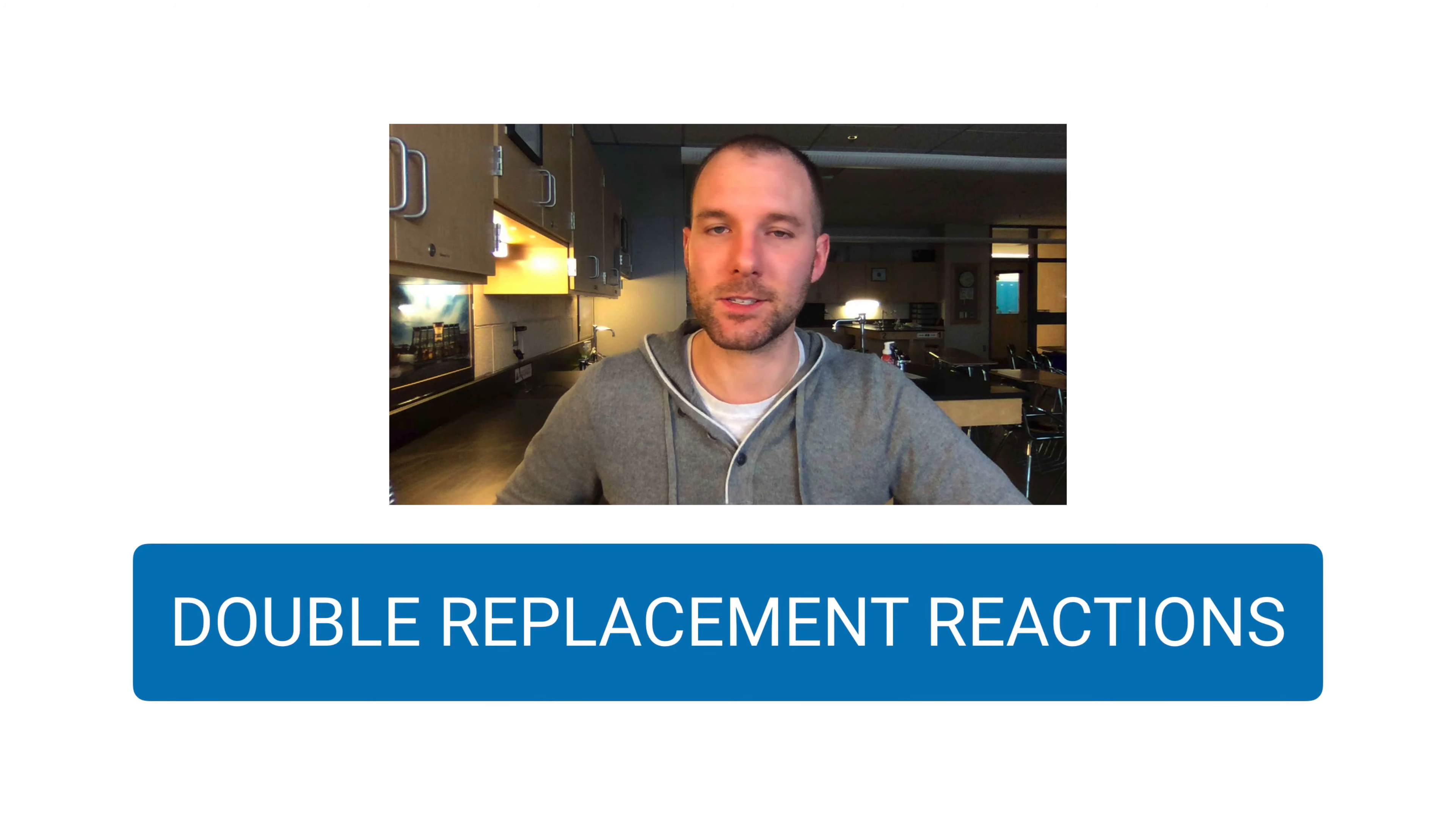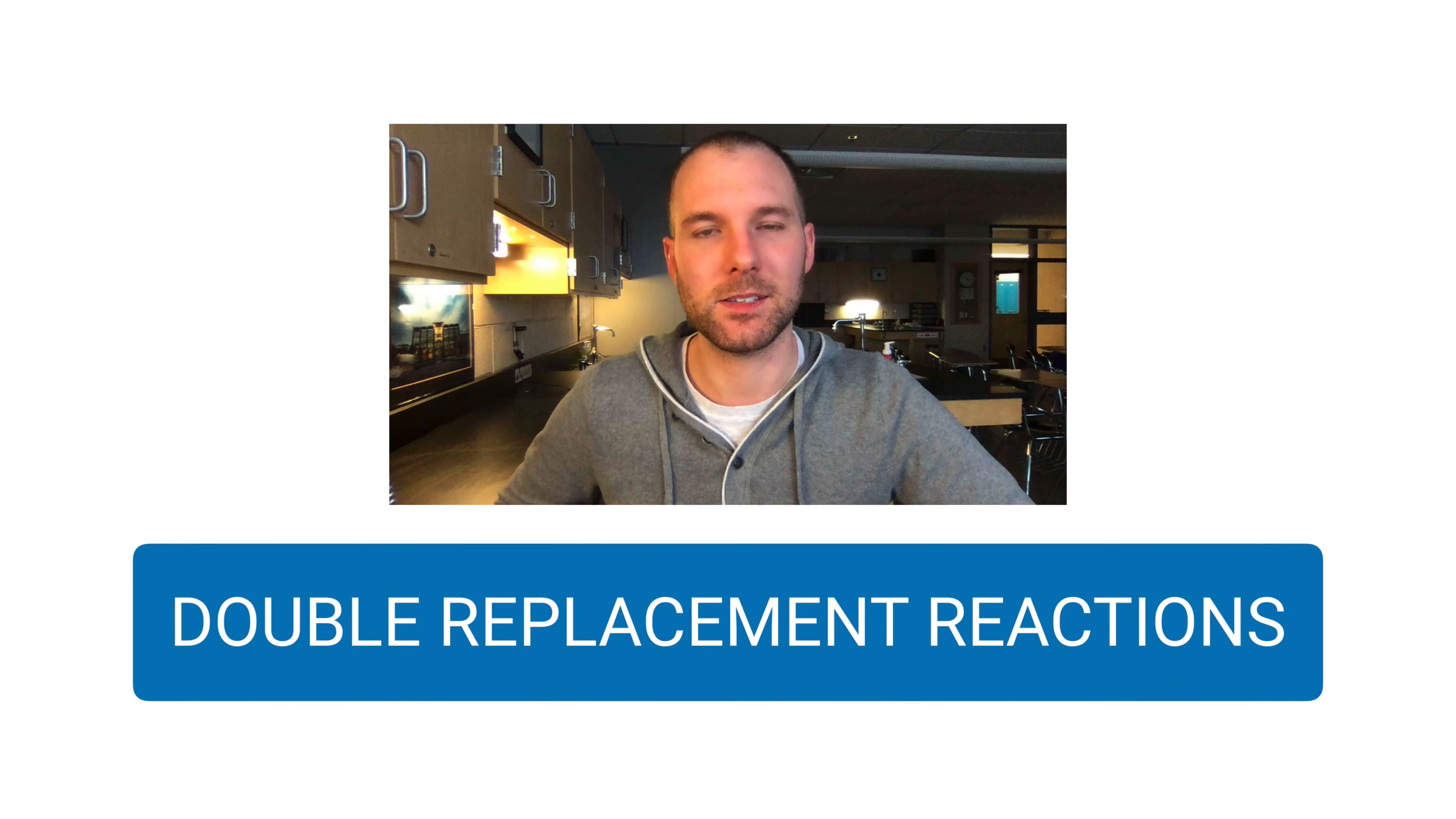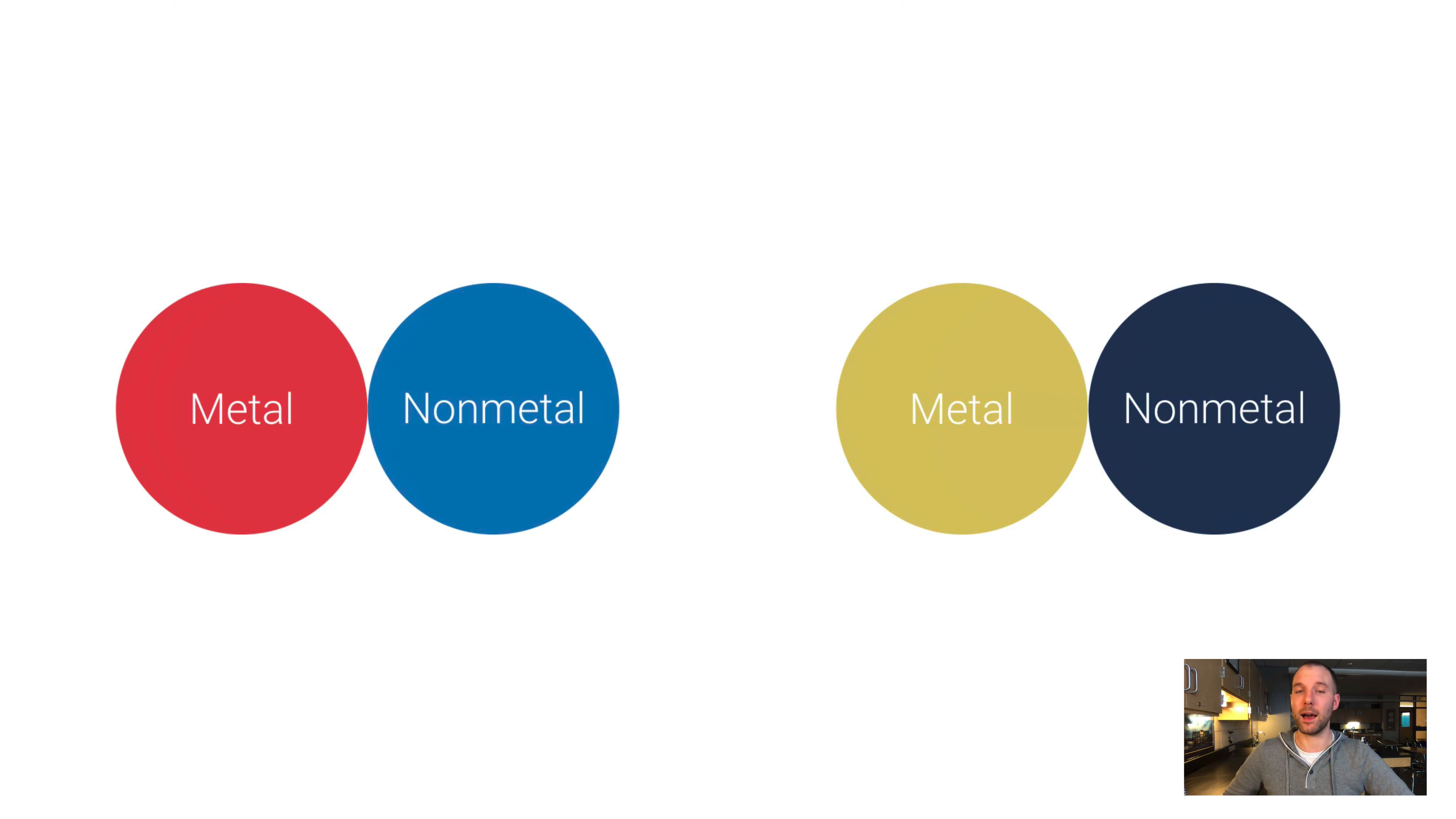A precipitate is just a solid, insoluble ionic compound that's formed as a product of one of these reactions. And so here's a visual of what a double replacement reaction looks like. You have two ionic compounds. Don't forget an ionic compound is something that's made up of a metal and a non-metal. And the metals switch places, and these are your products.